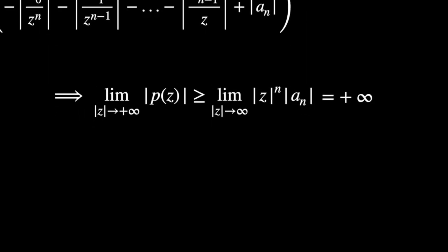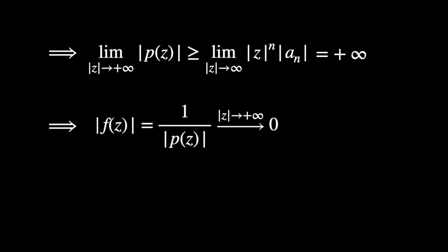So then, knowing this, we can say that f of z in absolute value, which is just 1 over p of z in absolute value, tends to 0 when z's absolute value tends to infinity. And therefore, there exists an r, a radius that is a positive real number, large enough such that the absolute value of f of z is always less or equal to 1 for any z such that its absolute value is greater than r. And this is an important fact.